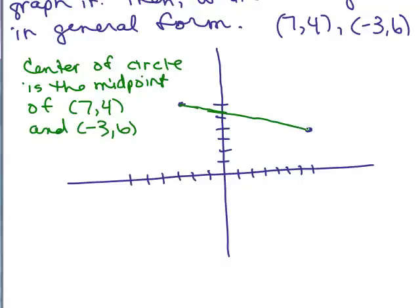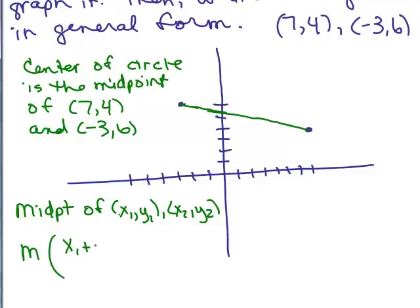You need to know the midpoint formula. So the midpoint formula for two points, if you have (x₁, y₁) and (x₂, y₂), is the average of the x's and the average of the y's. So the midpoint is (x₁ + x₂)/2. It's right in between (-3) and 7.